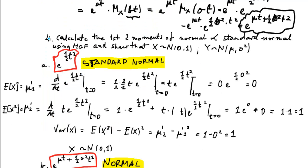Now let's do an exercise, because the reason we derive moment generating functions is to get moments out of them. The exercise is: calculate the first two moments of normal and standard normal variables using their MGFs, and show that Y is distributed with mean μ and variance σ². Let's start with the standard normal.